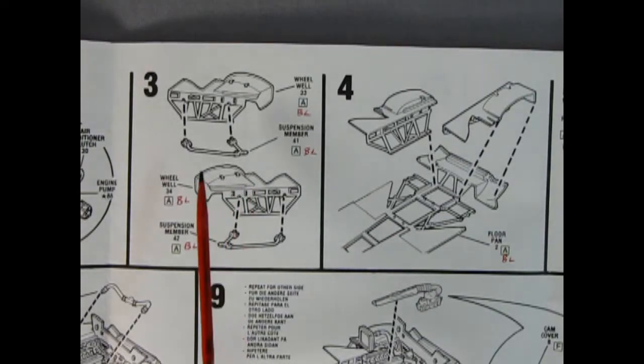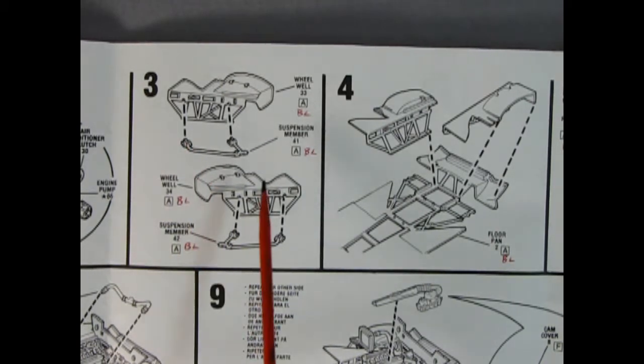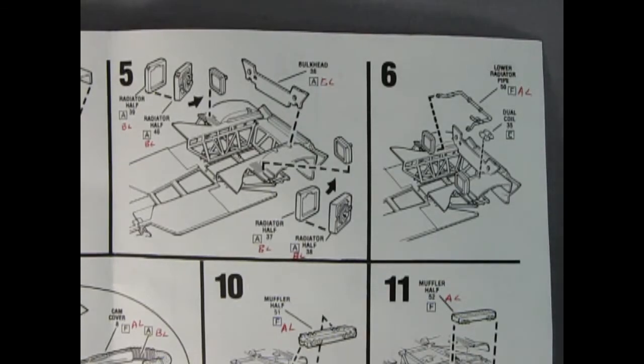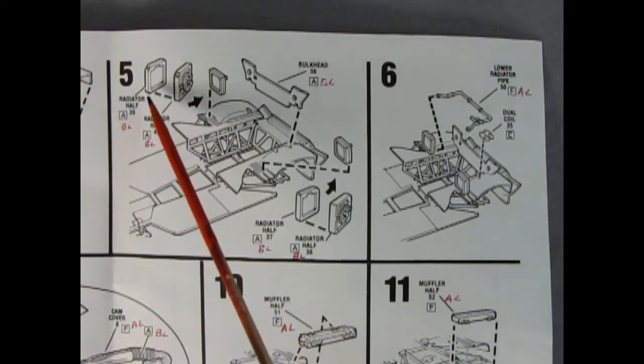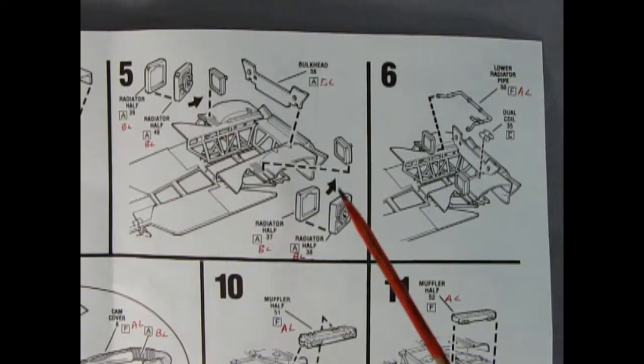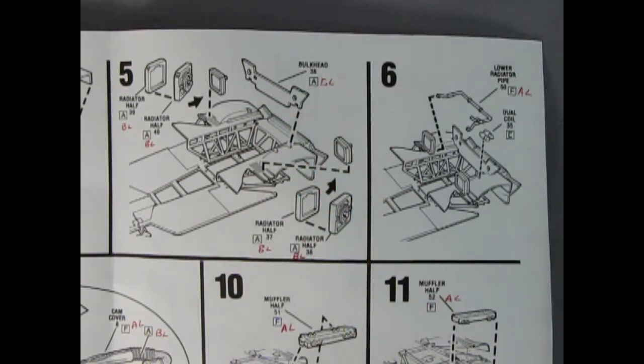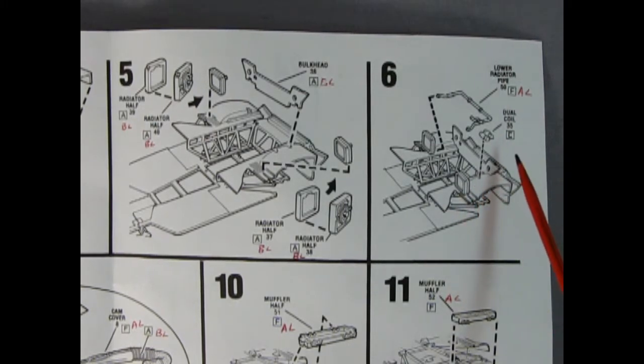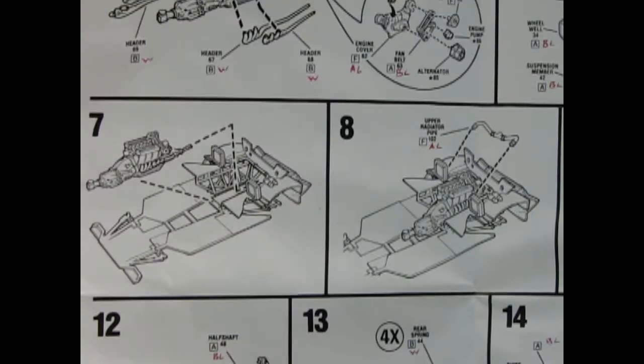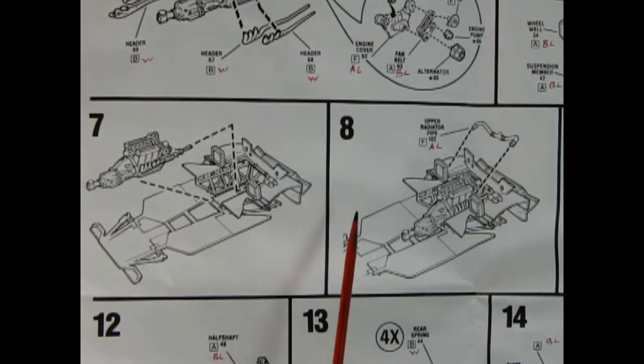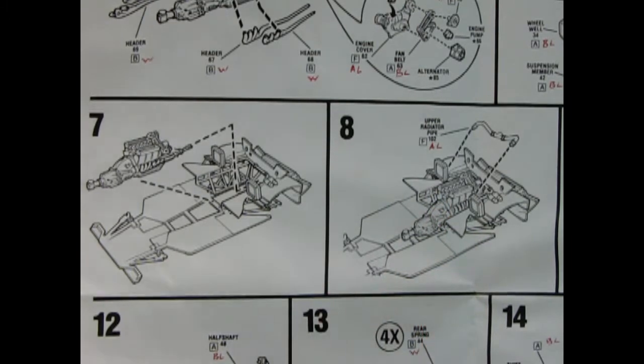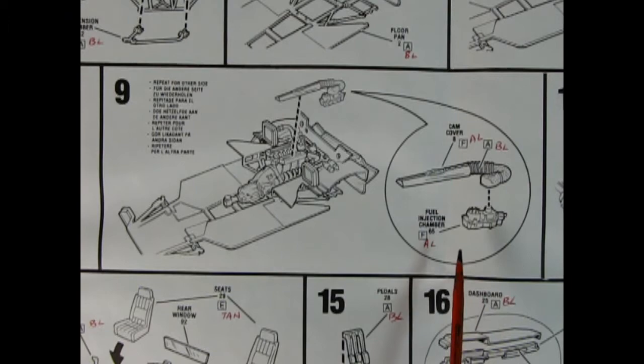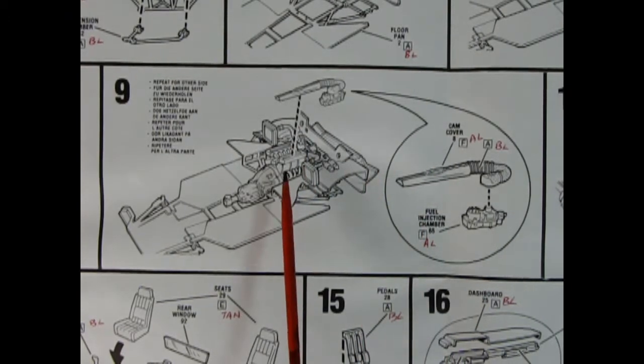Panel three shows our wheel wells with suspension members being glued on, then you drop them onto the floor pan. Panel five shows these radiators being glued together - you get an outer and inner half - and then we've got this rear bulkhead as well. Panel six shows the lower radiator pipe being glued in place as well as the dual coils. Panel seven shows our V12 engine being dropped into place. Panel eight shows where the upper radiator pipe goes in relation to the fans and engine. Panel nine shows the cam cover and fuel injection chamber being glued together and dropped on top of the engine.